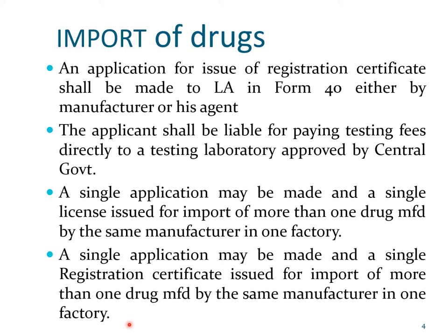For example, if drugs are being manufactured in Vietnam in one location, a pharmaceutical organization wishing to import those drugs makes a single application. However, if the drugs are being manufactured in three different locations in Vietnam, then the manufacturer has to apply in Form 8 or 8A in triplicate — three different forms for application and three different forms for license. Each location requires one license.